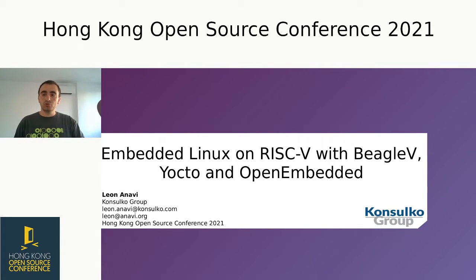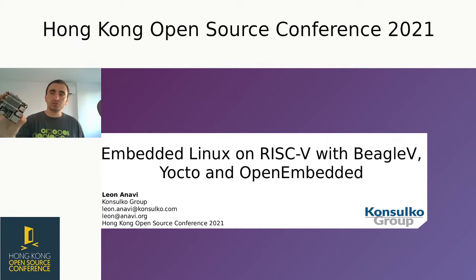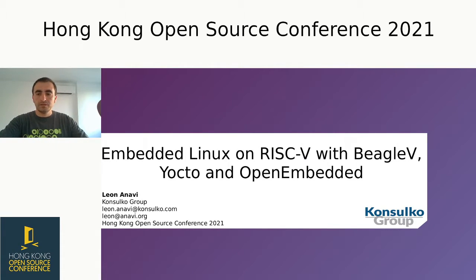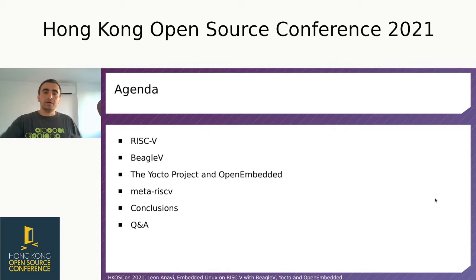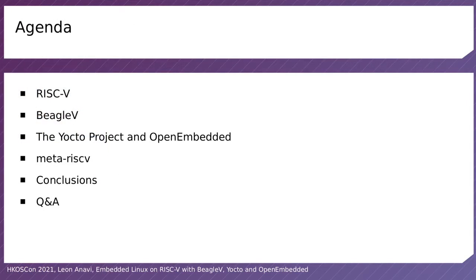Today I have the pleasure to show you this beta unit of BeagleV-5 and to talk about some of the technologies and how to build a custom GNU Linux distribution for it. The agenda includes a brief introduction to RISC-V, then we'll talk about BeagleV-5, the Yocto project and OpenEmbedded, and finally conclusions with Q&A.